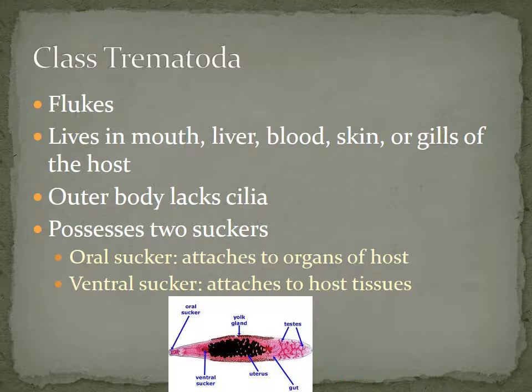The first class of parasitic worms is Trematoda — these are your flukes, often called liver flukes. They often live in the mouth, liver, blood, skin, or even the gills of their hosts. They have an outer body that lacks cilia because they don't need to move much — they simply suck off their host. They often possess two suckers: an oral sucker that attaches to organs in the host, and a ventral sucker that attaches to tissues within the host.